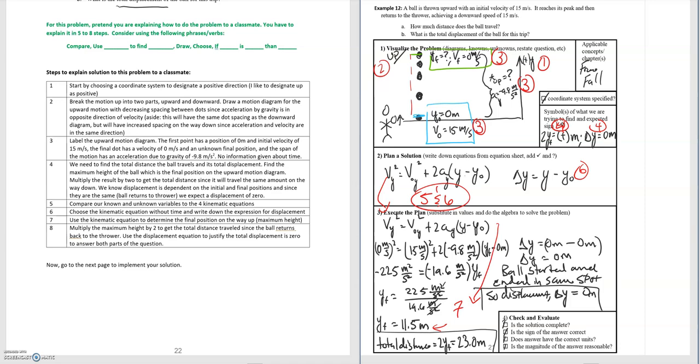And then for step 8 we multiply the maximum height by 2 to get the total distance traveled since the ball returns back to the thrower. Remember YF is just the distance to the top. It still needs to come back down to be able to be included for the total distance. And so this is step 8. This boxed part here where we multiply that maximum height by 2 to get 23 meters.